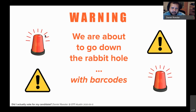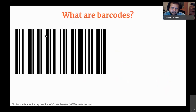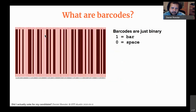So first off — what are barcodes? Barcodes are basically nothing more than binary. A one is a dark line, a bar; a zero is a space. You subdivide barcodes into segments — the wider the bar, the more ones there are; the wider the spaces, the more zeros. I've taken a barcode and subdivided it into ones and zeros, stringing them out along the bottom.